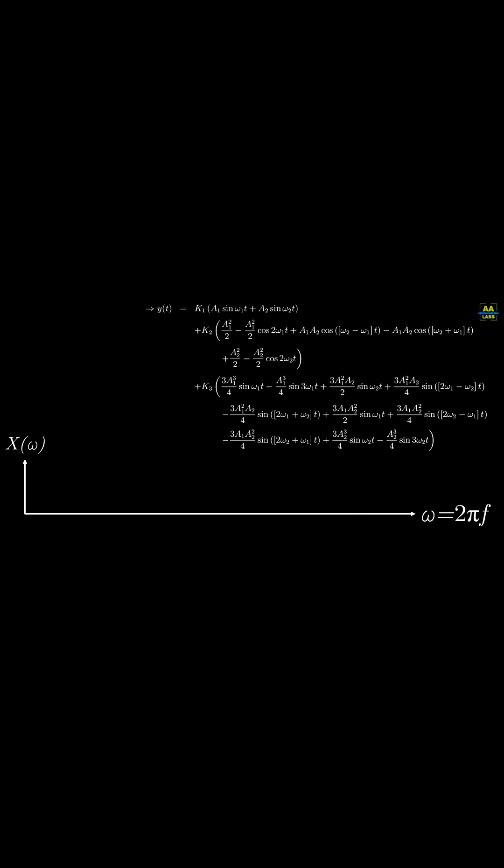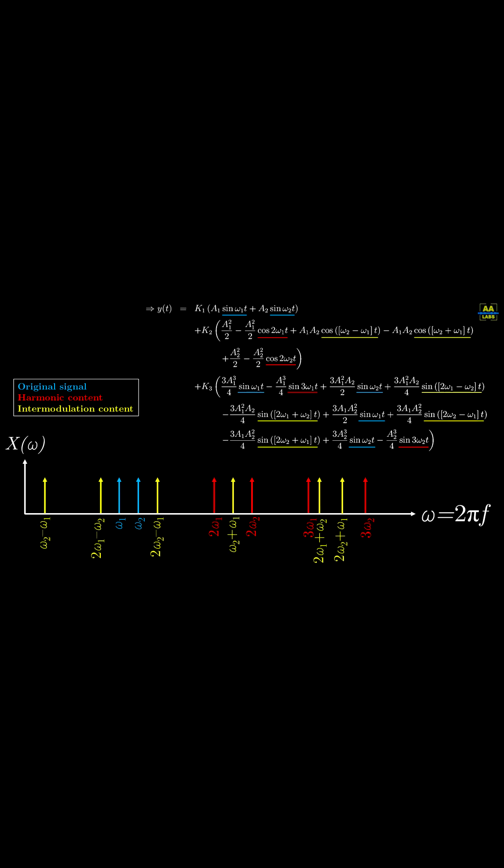We see the frequencies of the original two-tone signal. We see the harmonic frequencies of each of the tones. And we see these additional sum and difference terms, which represent IMD.